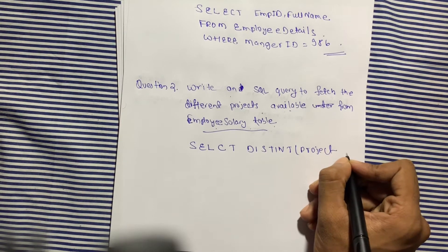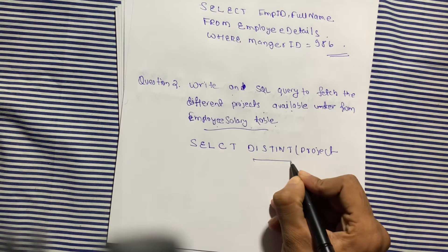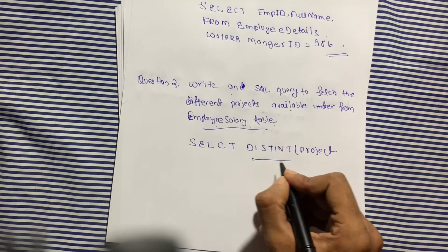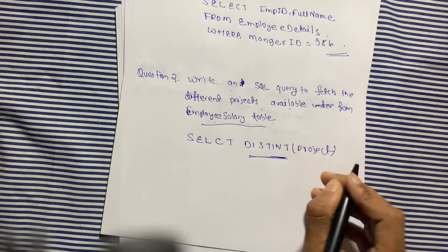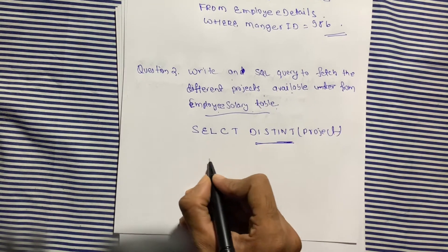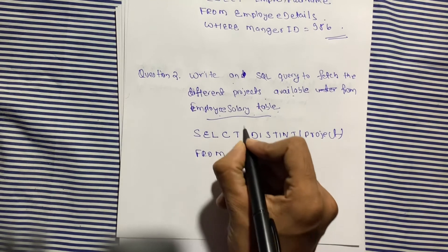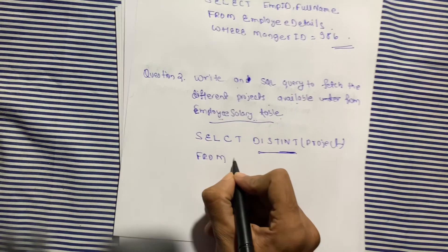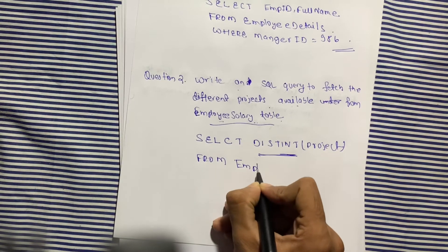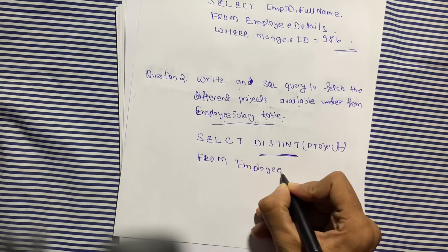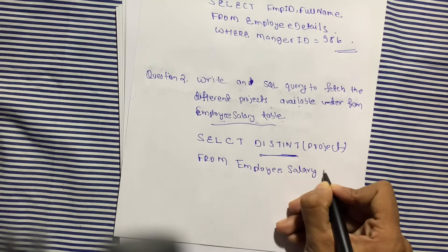We will use SELECT DISTINCT project — the DISTINCT clause is used to get the unique value of the project. Then FROM employee_salary. That is our second query.